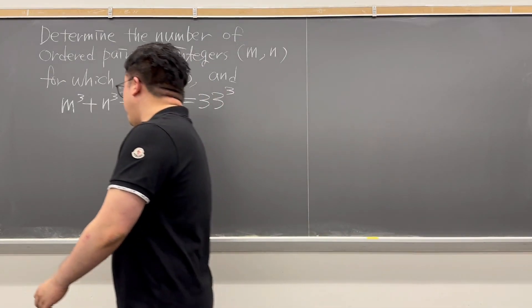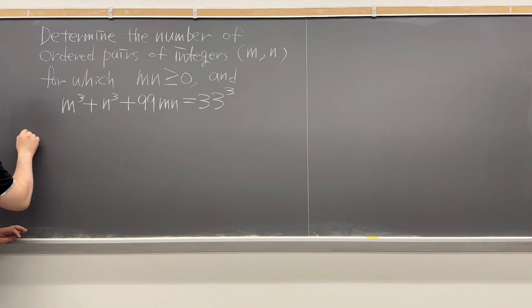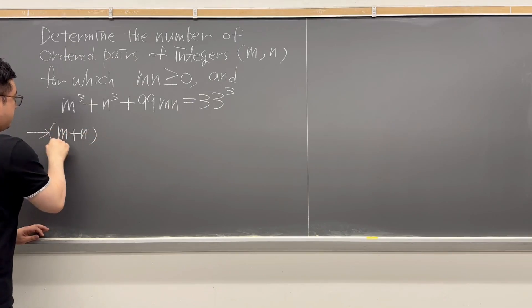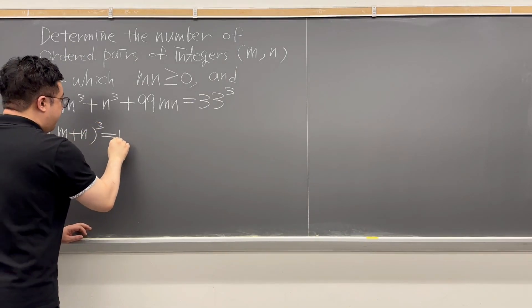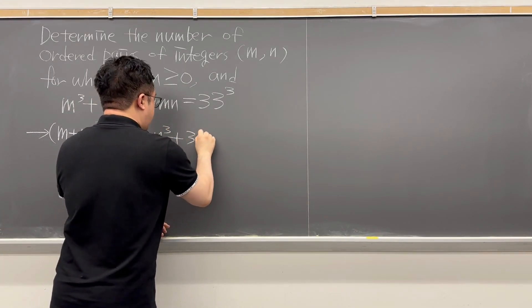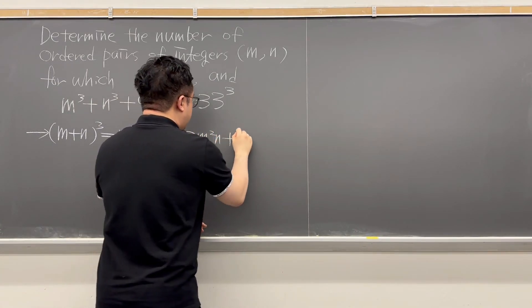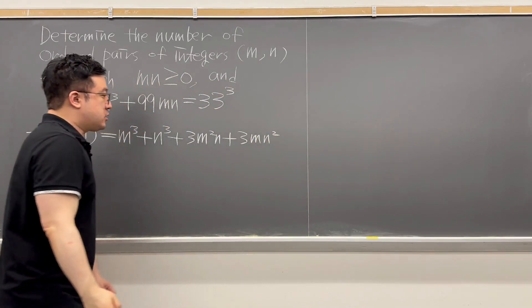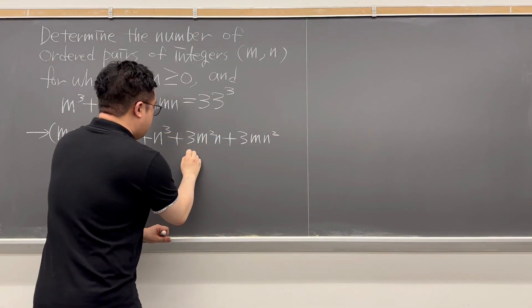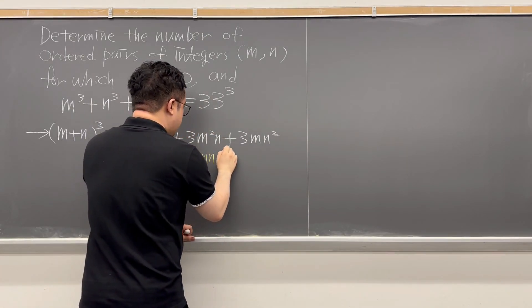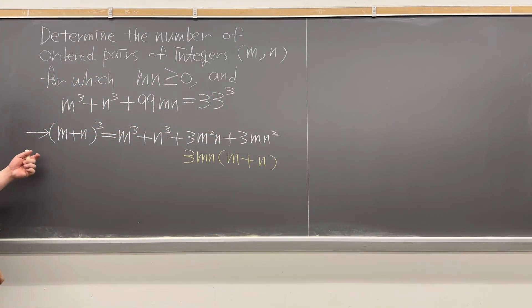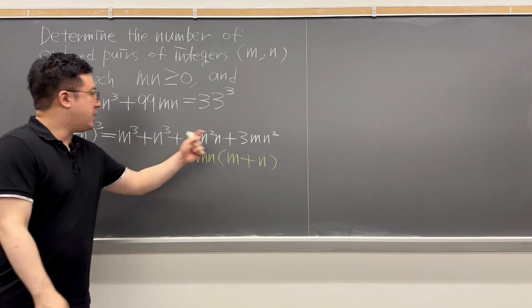For this question, because we have a cubic equation, let's think about (m plus n) cubed. If you distribute this, we'll have m cubed plus n cubed plus 3m squared n plus 3mn squared. The last two terms can be grouped as 3mn times (m plus n). So this is what we get for (m plus n) cubed.